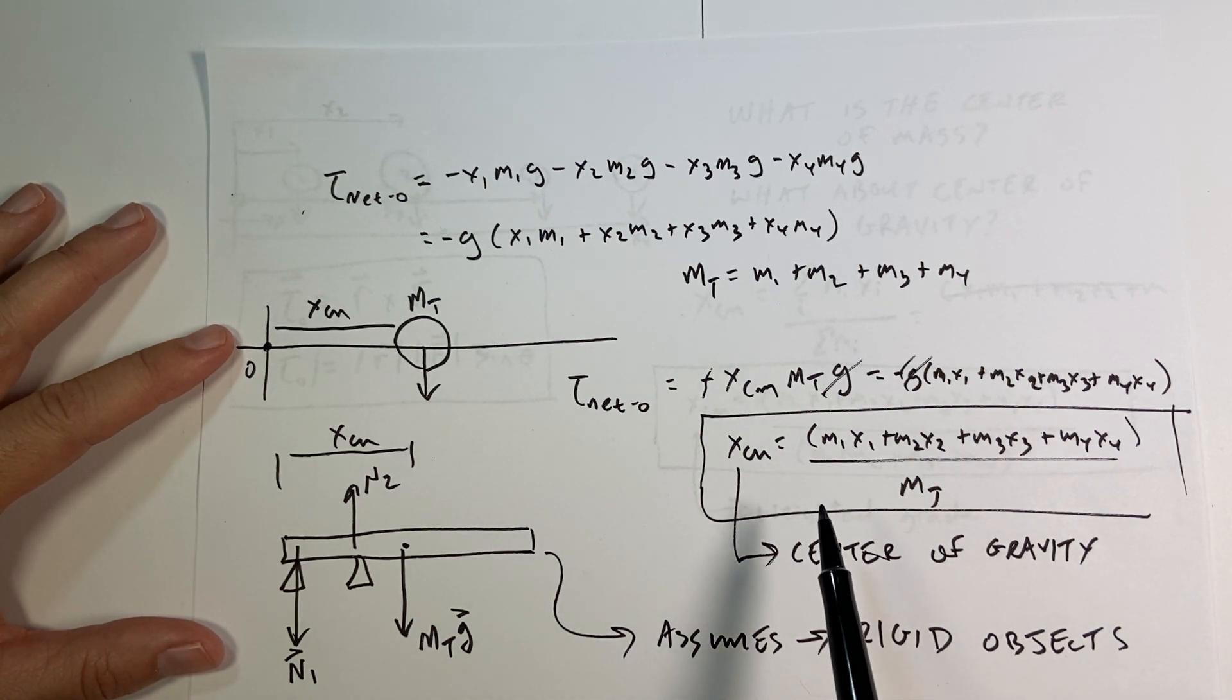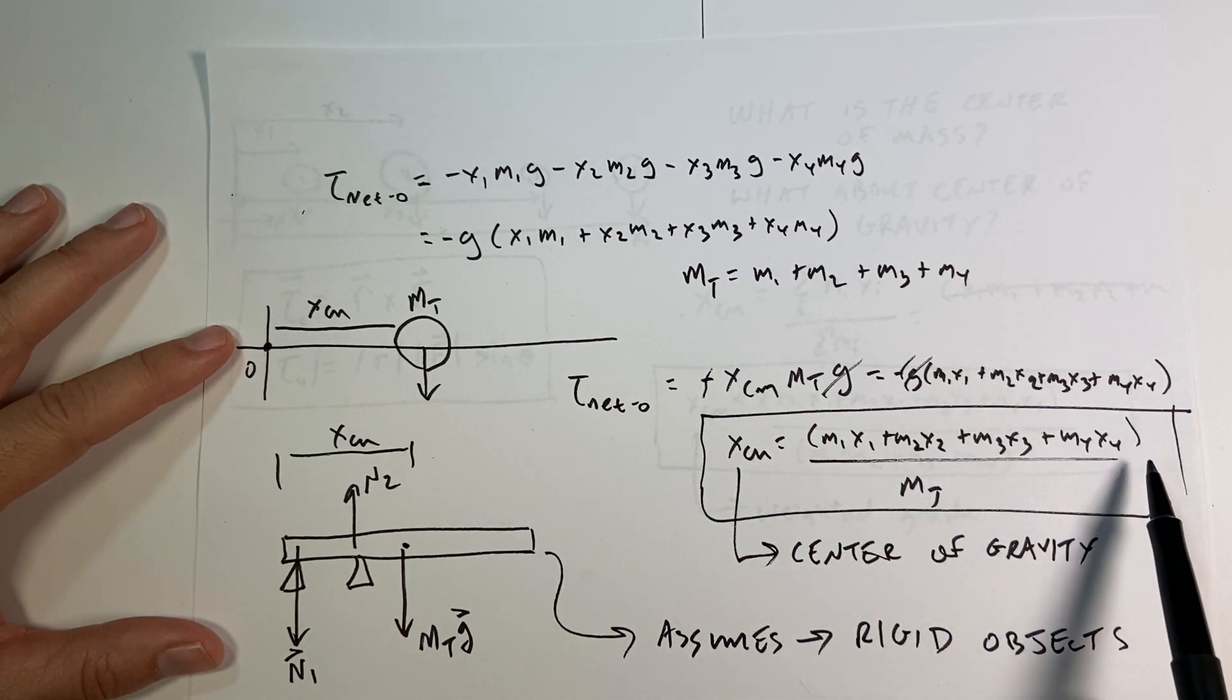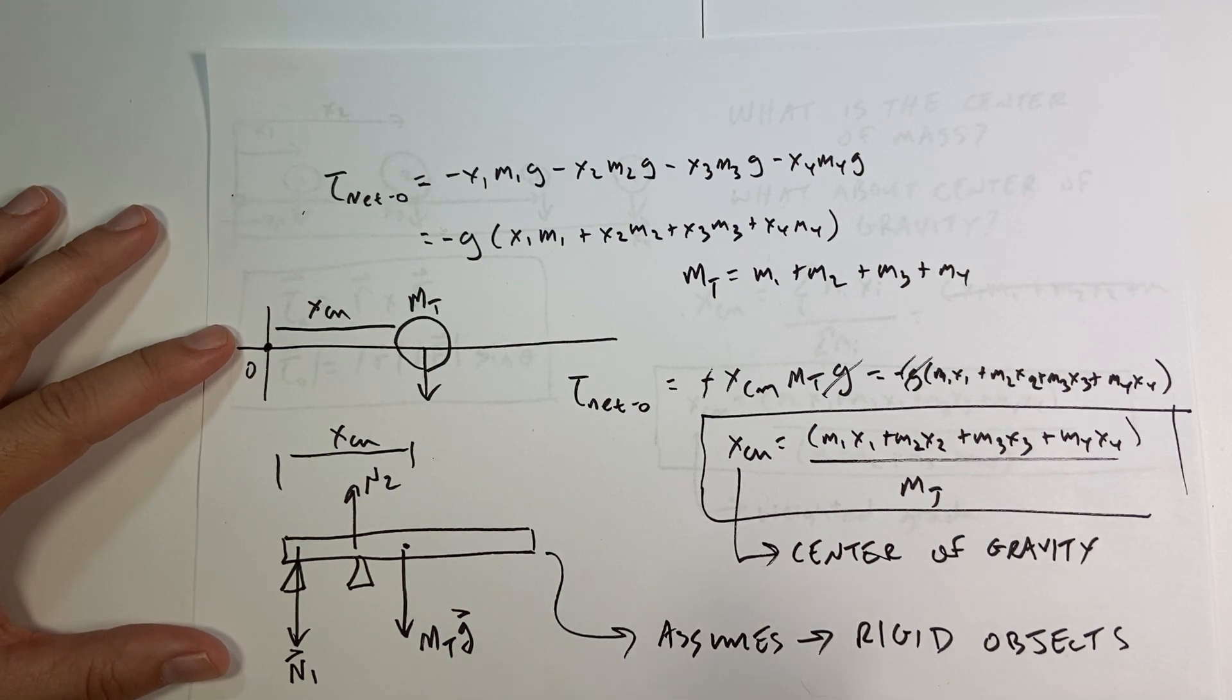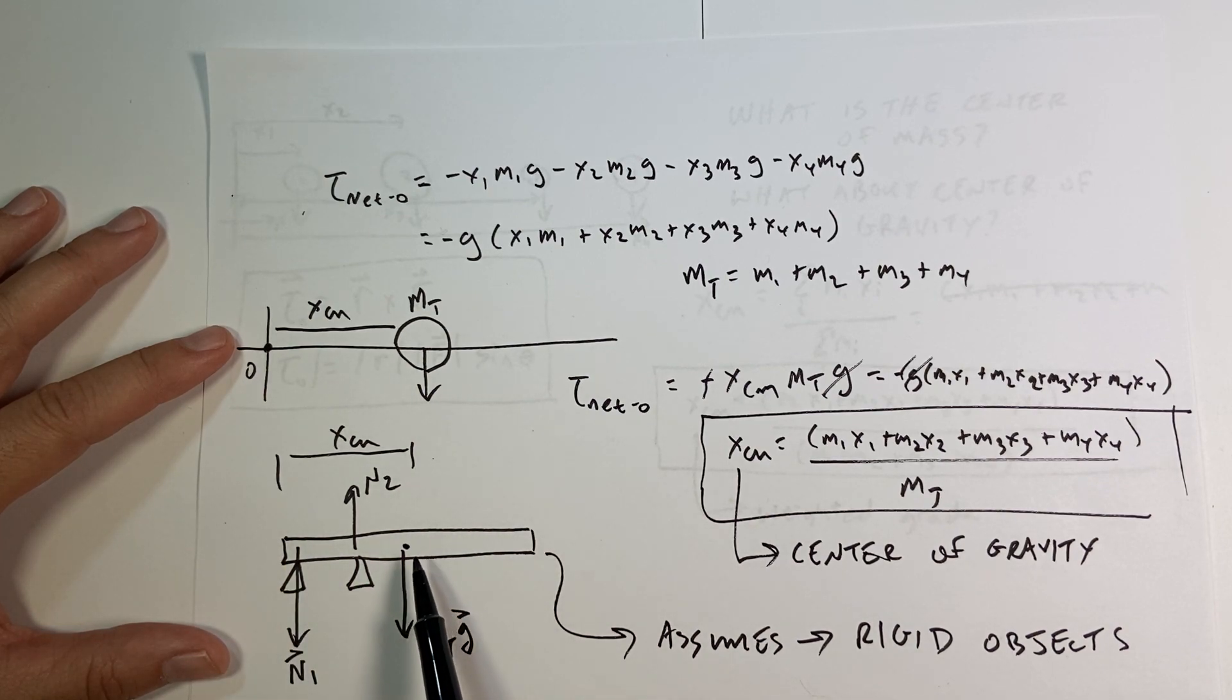So key point, the center mass is the center of gravity, not always. I'm going to show you in the next video when the center mass is not equal to the center of gravity, but this allows us to place one single gravitational force on a rigid object.